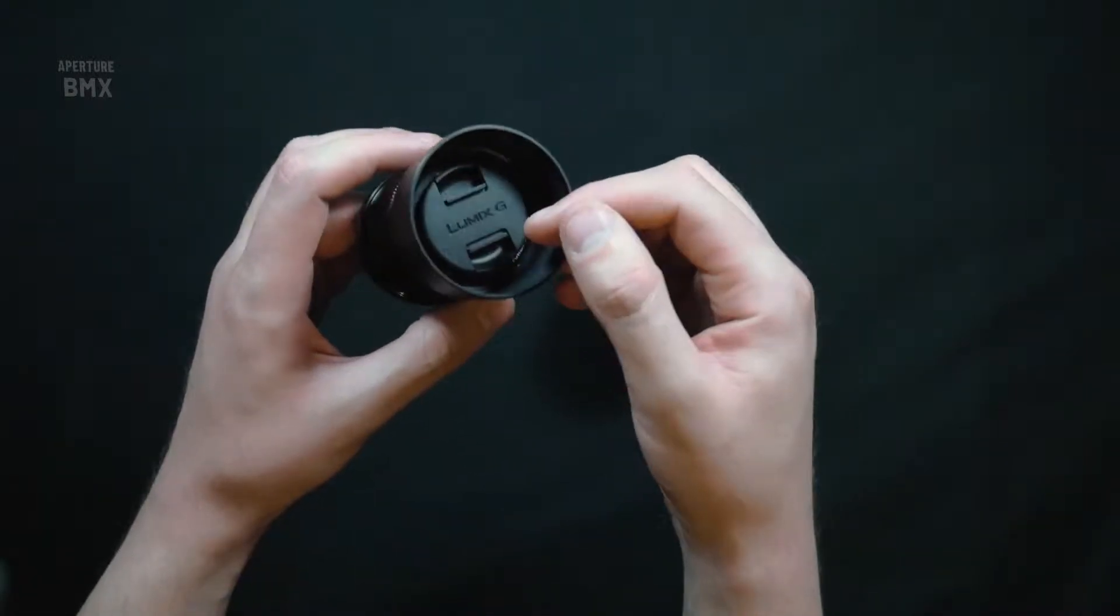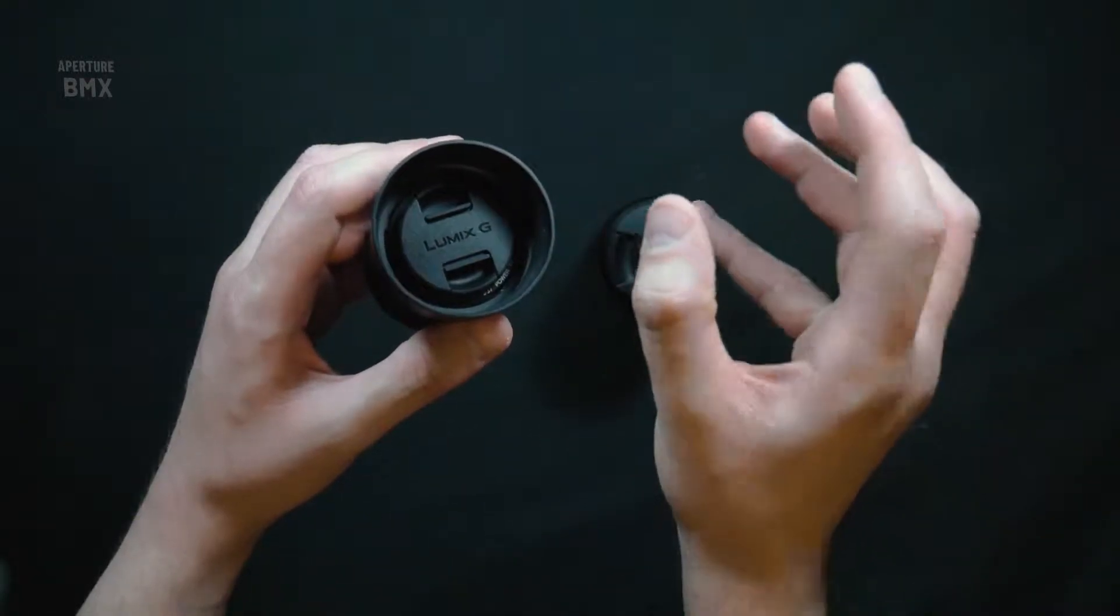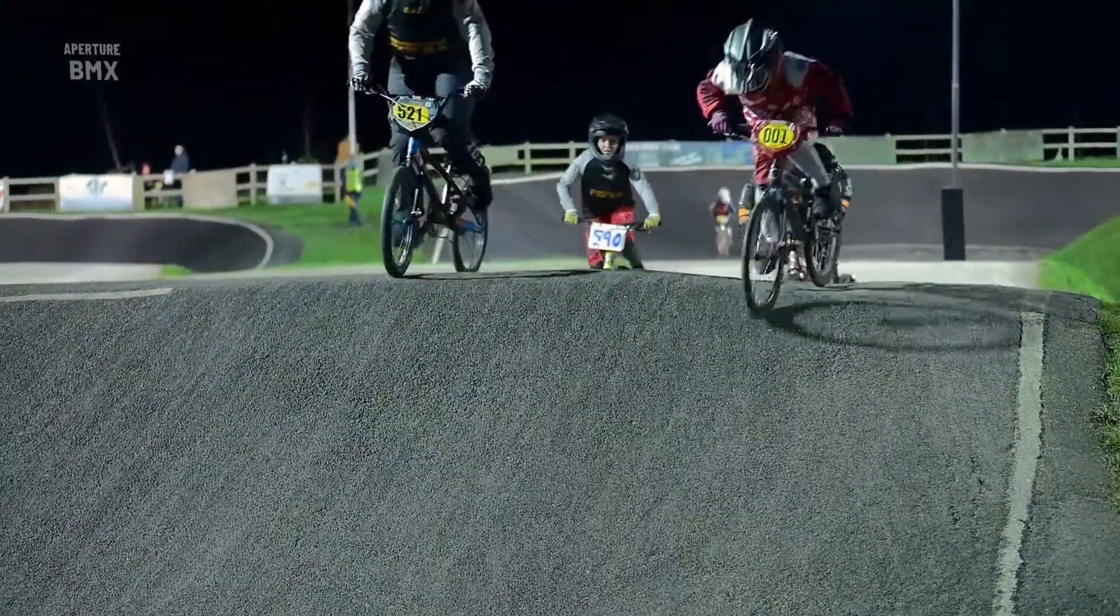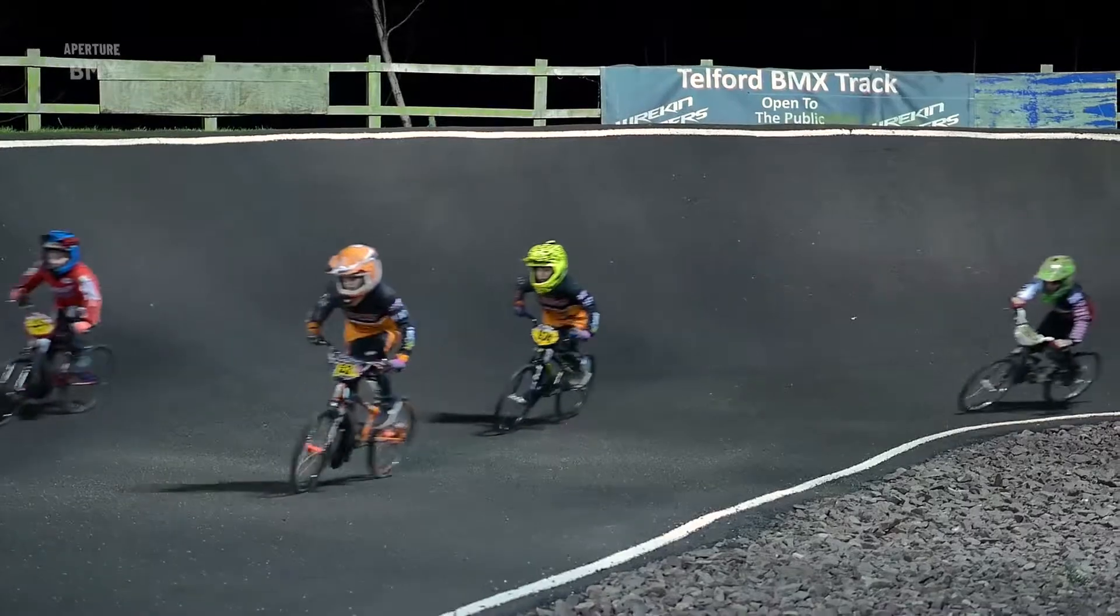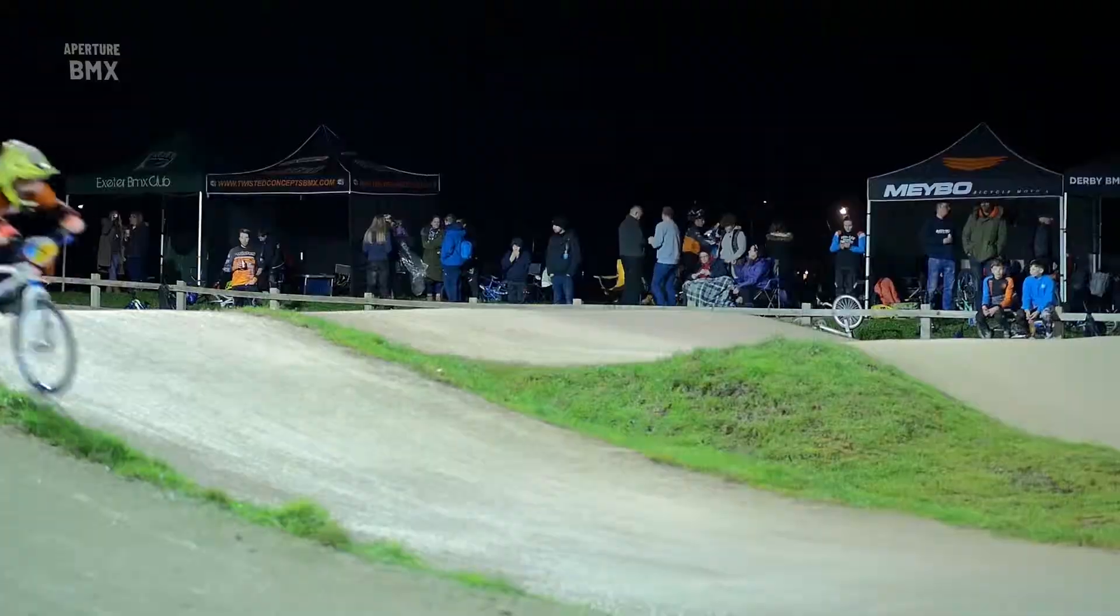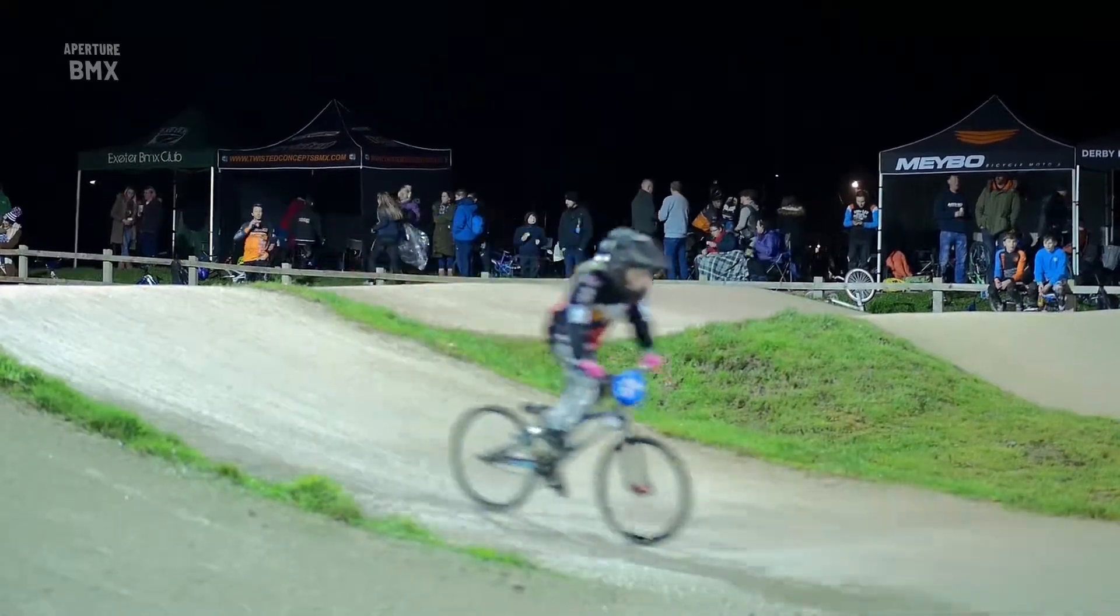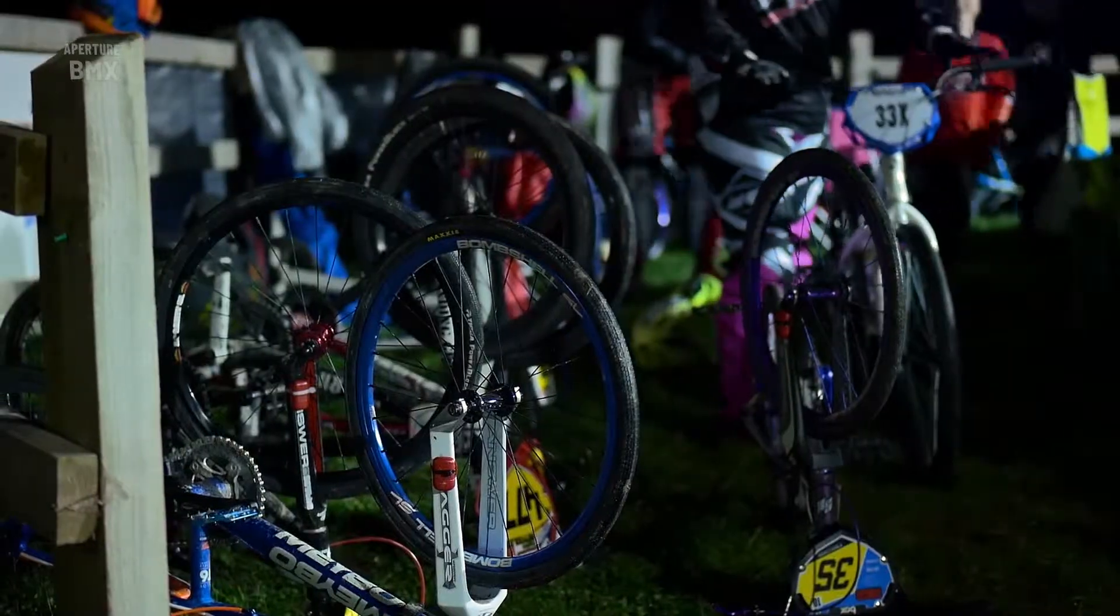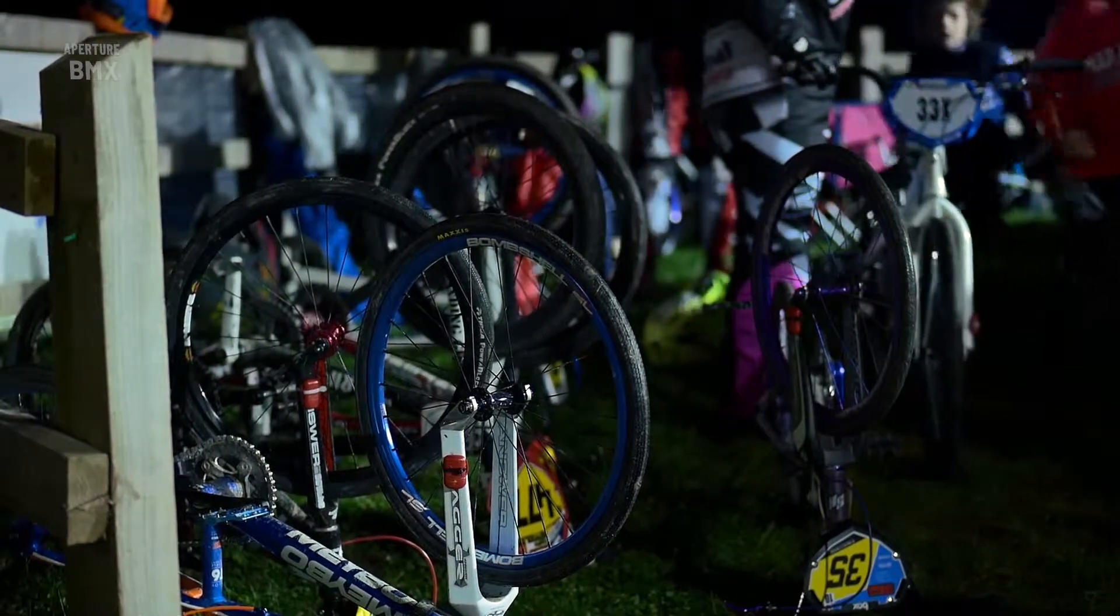So I bought this lens—the Panasonic Lumix 42.5 millimeter f1.7. 42.5 millimeter is a great focal length for filming BMX racing because it lets you capture the whole track, everything from the far side to the near side, whether you've got track access or are just standing by the side.